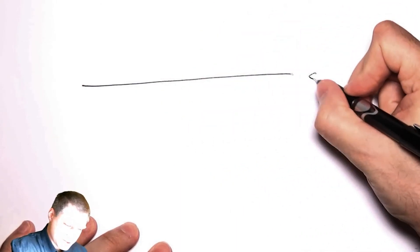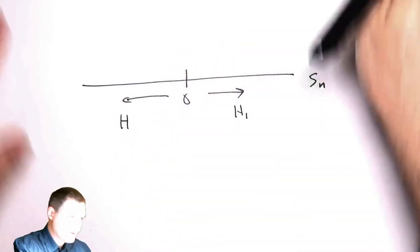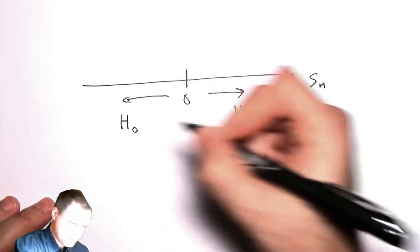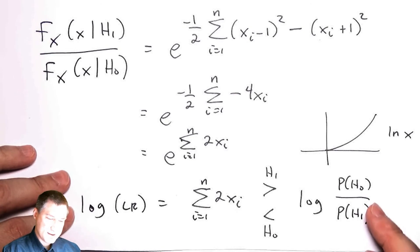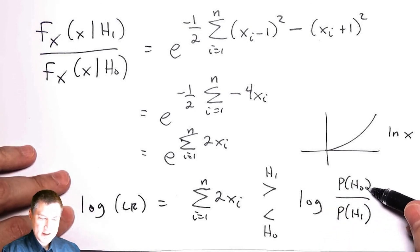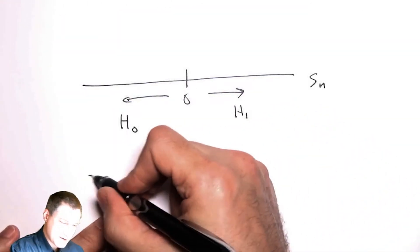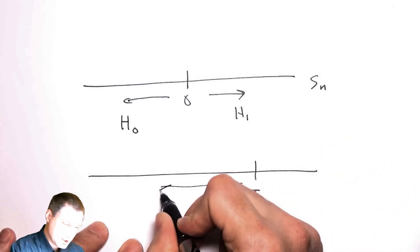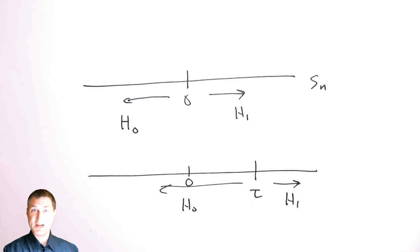The decision boundary can be visualized on a number line: above the threshold choose H1, below it choose H0. But that threshold shifts depending on the log ratio of the priors. If p(H0) is greater than p(H1), the log ratio is positive, the threshold shifts, and I'm generally more inclined to accept H0 because the prior probability says that's likely. So tau slides back and forth depending on the ratio of the priors.